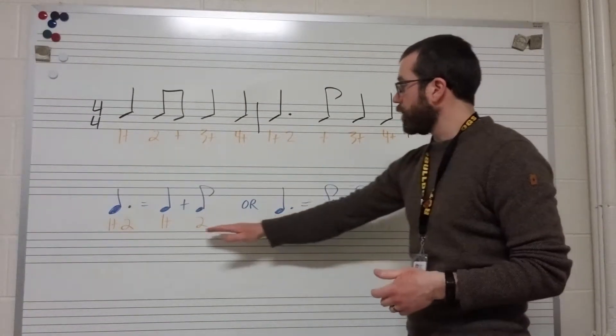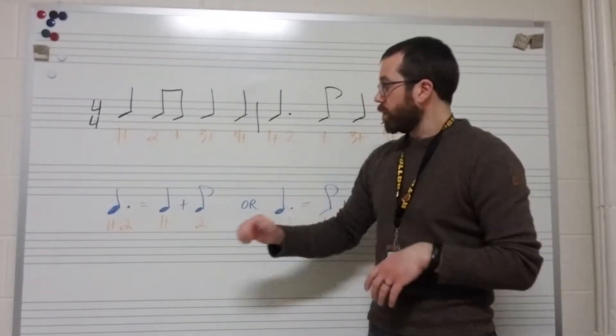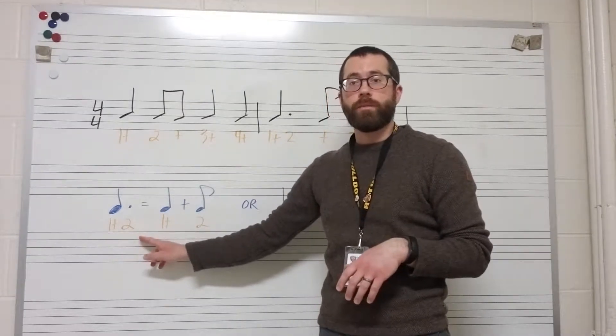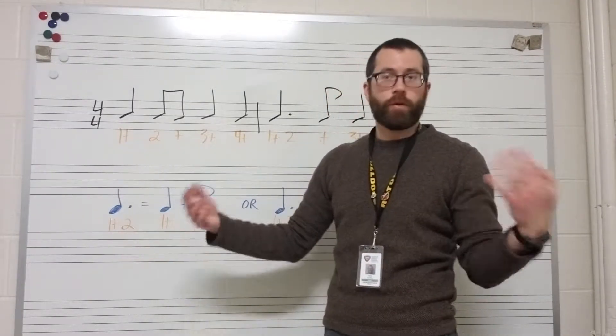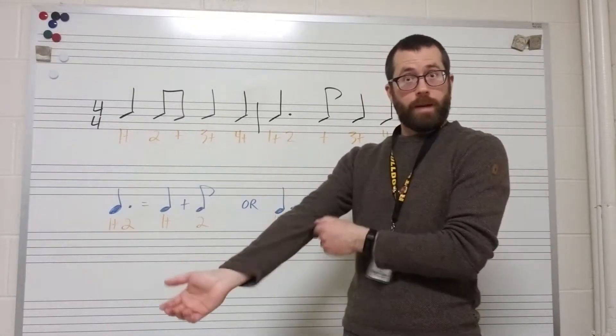Underneath each rhythm, I've written out the counting so that you can see how that breaks down. So, for example, over here, the dotted quarter note is counted as one and two. You could also do two and three or three and four. It really depends on where the note falls in the measure and what your time signature says.